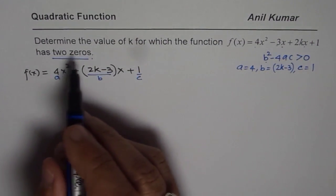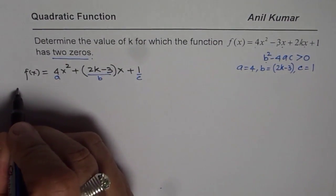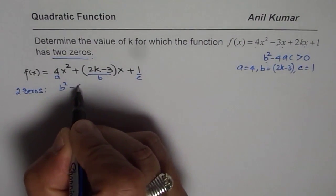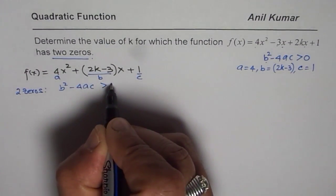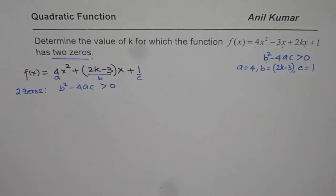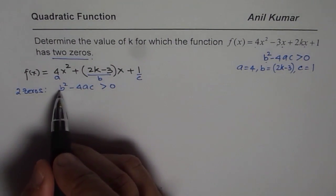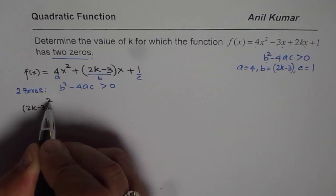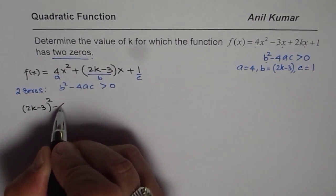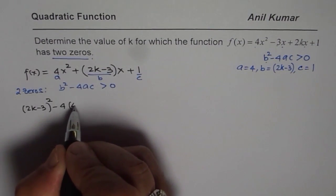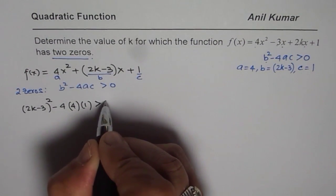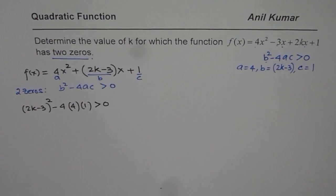Now since we need two zeros, that means b squared minus 4ac should be greater than 0 — it has to be positive. Now let us substitute the values and calculate. So b squared means (2k minus 3) whole squared, minus 4 times a which is 4, times c which is 1, should be greater than 0.